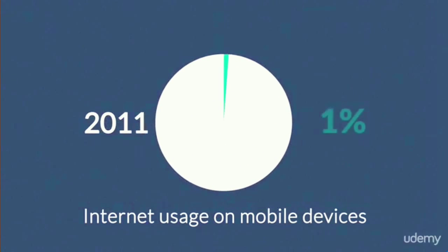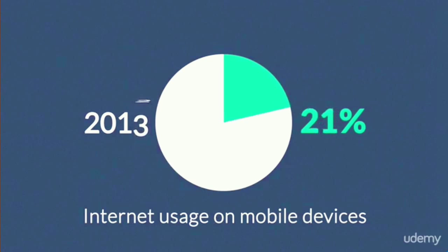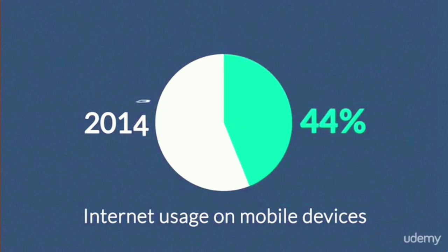In 2011, mobile browsing took a share of about 11%. In 2013, it was near to 25%, and 2014 was the first year mobile exceeded desktop Internet usage.